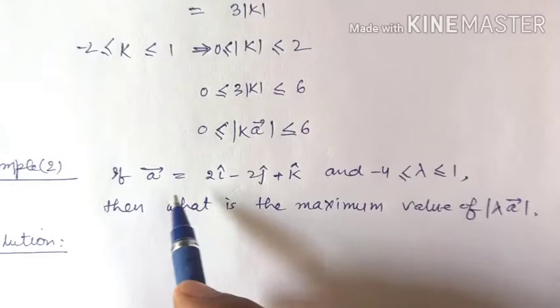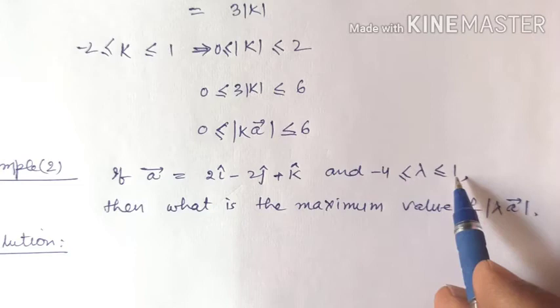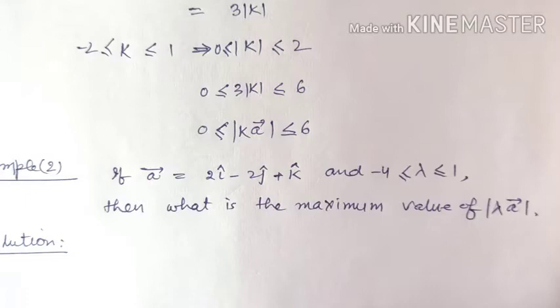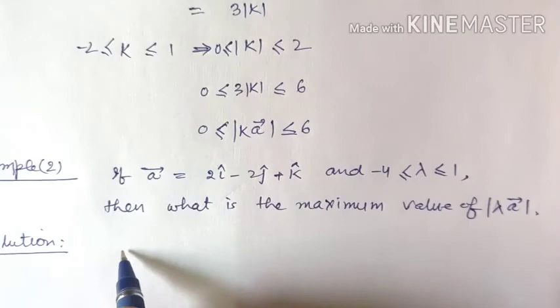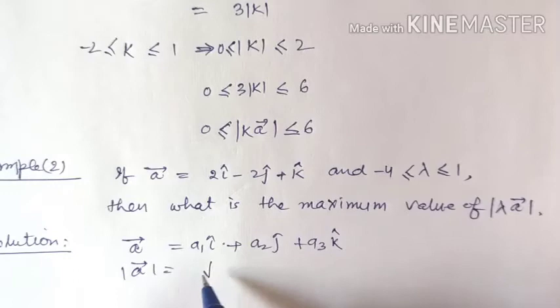Example 2: if vector a is 2i minus 2j plus k and lambda lies between minus 4 and 1 (more than or equal to minus 4, less than or equal to 1), then what is the maximum value of modulus of lambda a? If vector a equals a1*i plus a2*j plus a3*k, then modulus of a equals square root of a1 squared plus a2 squared plus a3 squared.